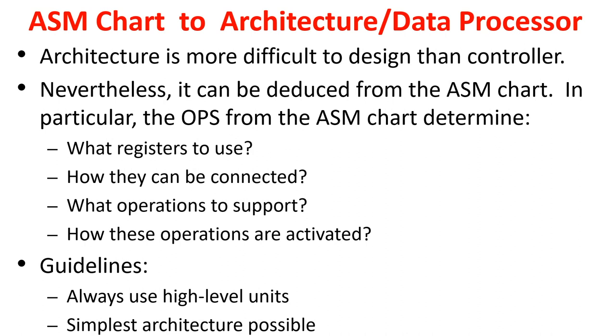How to come up with the architecture and data path: architecture is more difficult to design than a controller, but it can be deduced from the SM chart. The operations from the SM chart determine what registers to use, how they are connected, what operations to support, and how operations get activated. A simple guideline is to always use high-level units and the simplest architecture possible. In our case we use one 4-bit counter and 2 flip-flops — one for E and one for F — because we need to set/reset E and F.